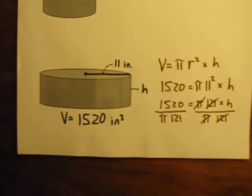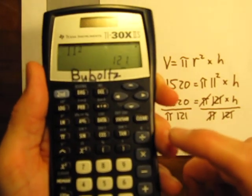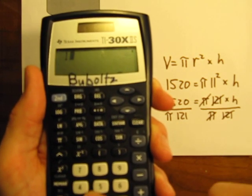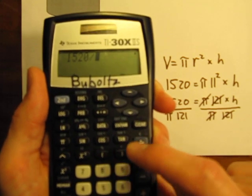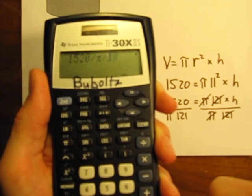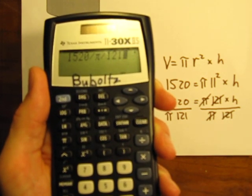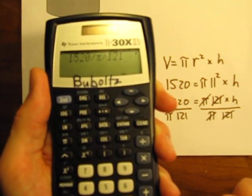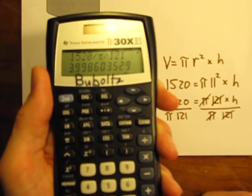You have to be careful about how you enter this. Again, there are a couple ways that you can do this entering this into your calculator. The way I'm going to show you here is I'm just going to do 1520 divided by pi, and I'm going to hit divide again divided by 121. So 1520 divided by pi divided by 121 equals 3.9986 and on and on and on.